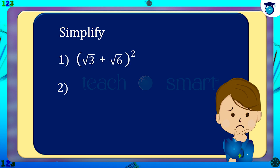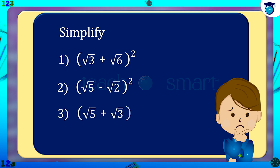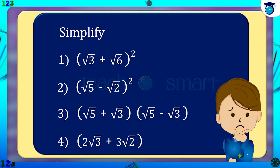Second, (√5 − √2) the whole square. Third, (√5 + √3) multiplied by (√5 − √3). Fourth, (2√3 + 3√2) multiplied by (4√5 + 6√3).